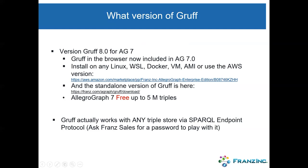Today I'm going to do my demos on the Windows Subsystem for Linux on a Windows machine. We run Docker in VMs, we have AMIs that you can download, and we're now on the AWS marketplace — there's a link where you can start your own free or enterprise version of AllegroGraph with Gruff included. Within a few weeks we'll also have the same for Microsoft Azure and Google Cloud.